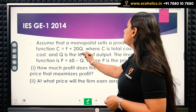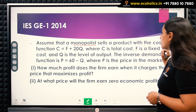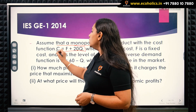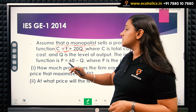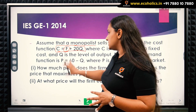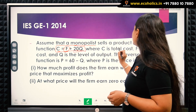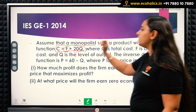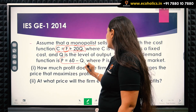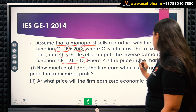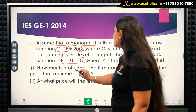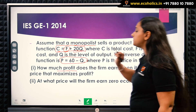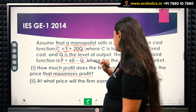The question reads: assume that a monopolist sells a product with the cost function C = F + 20q, where F represents the fixed cost and 20q is the variable cost. C is total cost, F is fixed cost, and q is the level of output. The inverse demand function is given, where P is the price in the market. How much profit does the firm earn when it charges the price that maximizes profit?